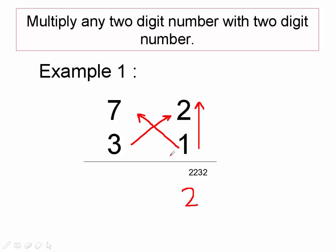So 1 into 7 is 7, 3 into 2 is 6, so 6 plus 7 is 13, and we leave the carry 1 here.